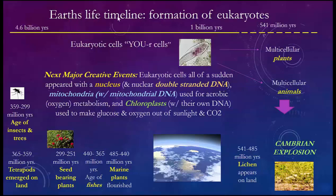Moving along Earth's timeline, one of the more important events is the formation of eukaryocytes. 'Karyocyte' means cell, and 'eu' means a good cell — or your cells, because this is where we all came from. The other cells were primitive. But about a billion years ago, eukaryocyte cells formed. This is a huge creative event, as big as the Big Bang.